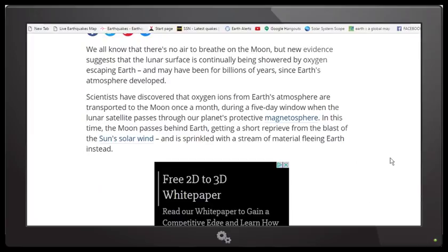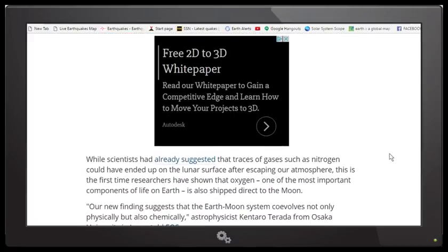It further states that scientists have discovered that oxygen ions from the earth's atmosphere are transported to the moon once a month, special delivery, during a five-day window when the lunar satellite passes through our planet's protective magnetosphere. In this time the moon passes behind earth, getting a short reprieve from the blast of the solar wind, and it's sprinkled with a stream of material fleeing the earth. Wow, they make it sound so good.